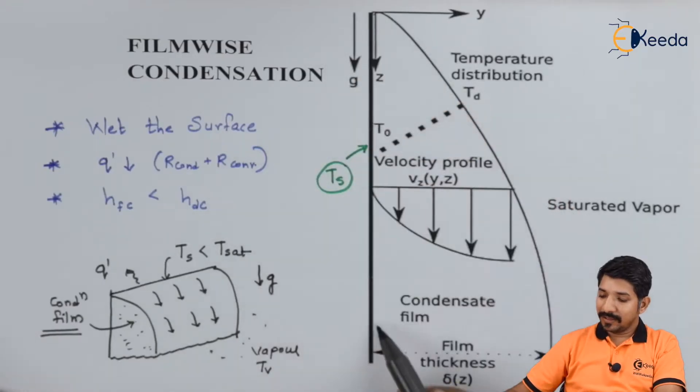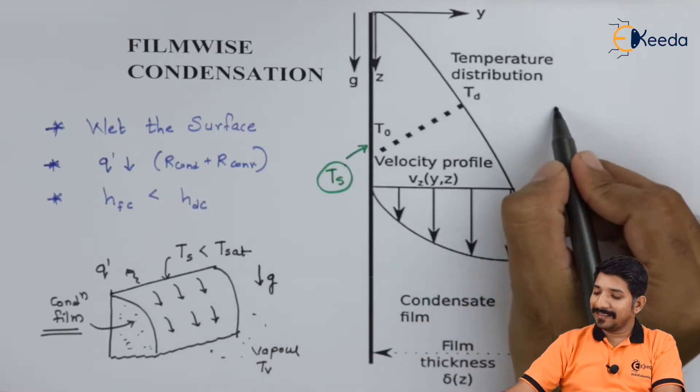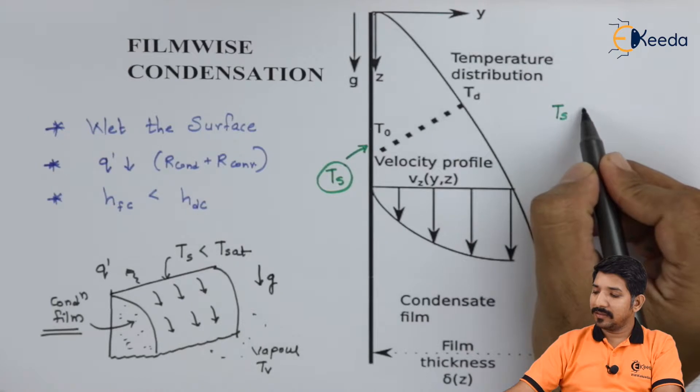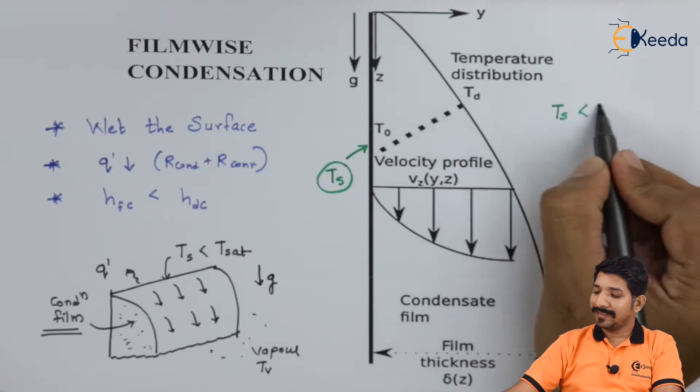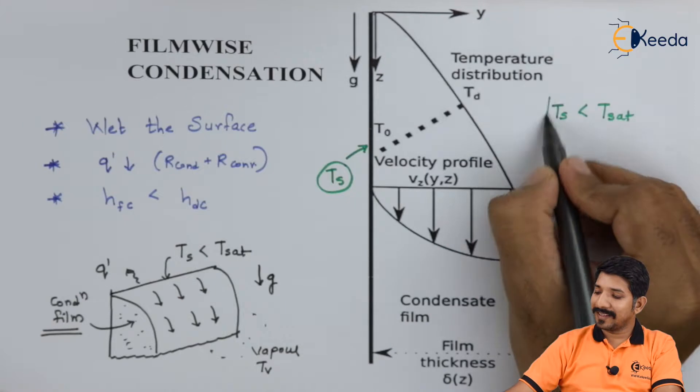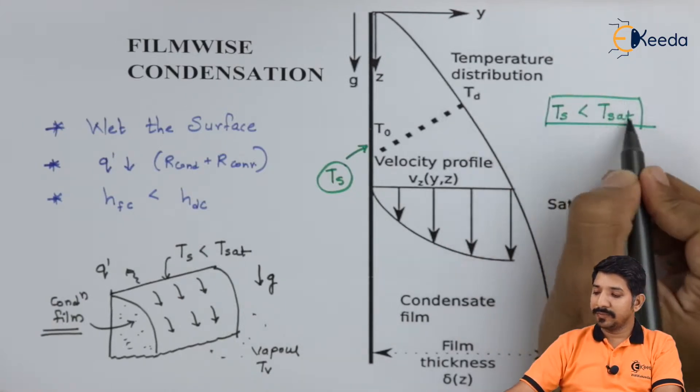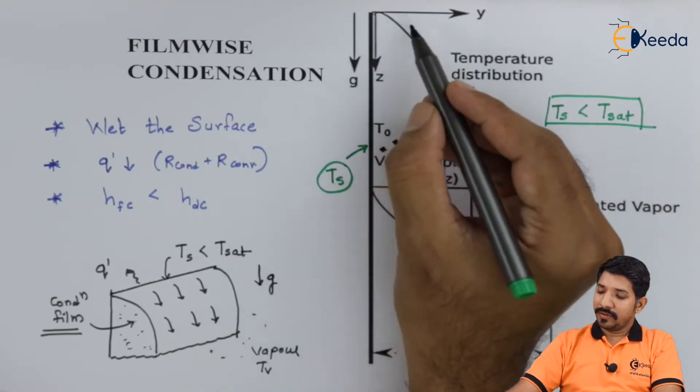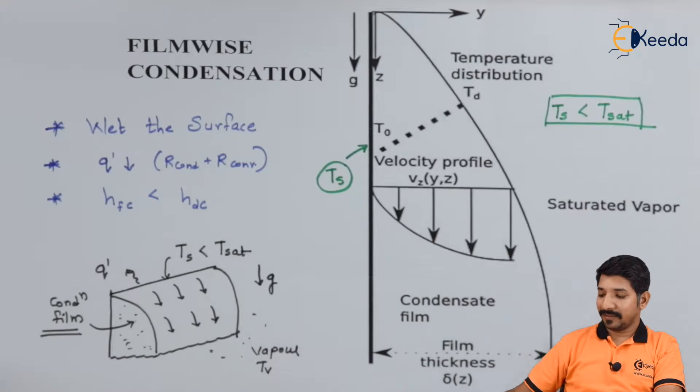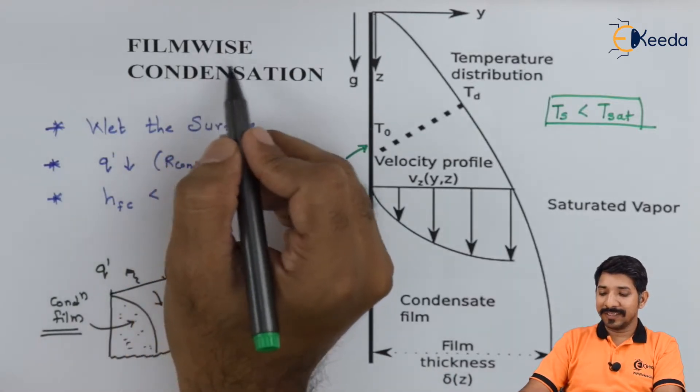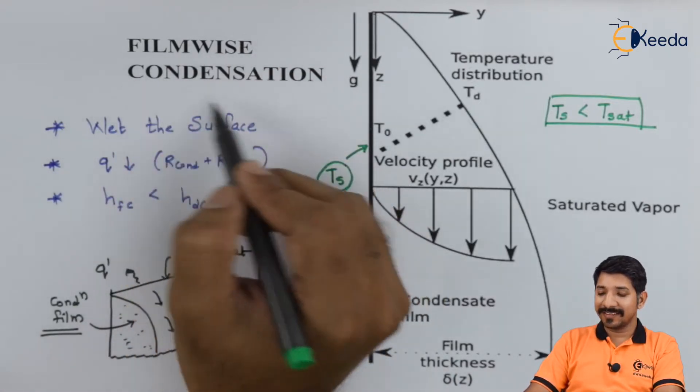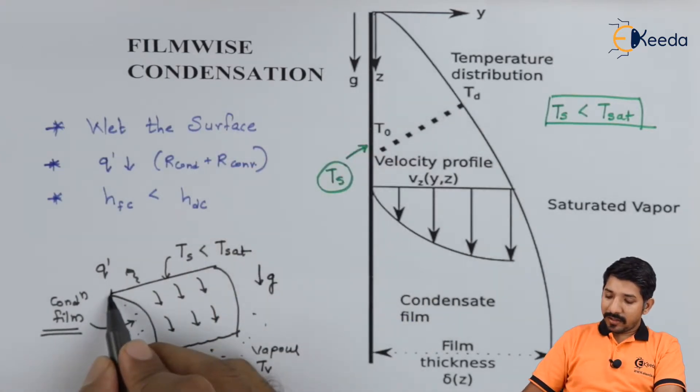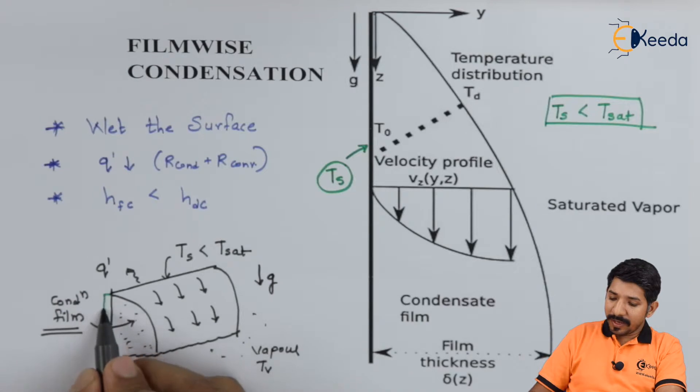Let us consider the surface temperature Ts is less than Tsat. What is Tsat? Tsat corresponds to the temperature of the fluid around the plate. Then a temperature profile may look something like this, where a film thickness delta Z will be formed. What do you mean by film thickness or filmwise condensation is that a small film will be formed over a surface.